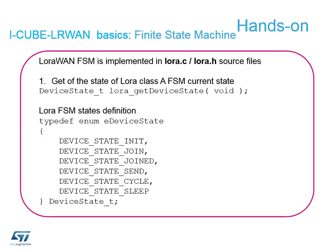We can also find out where we are in our finite state machine using a 'get device state' command. You'll get one of these responses: you're in the init state, join, joined, send, or sleep. There is one extra state called 'cycle', which means you happened to request it while it's in between one of those defined states in the finite state machine diagram.